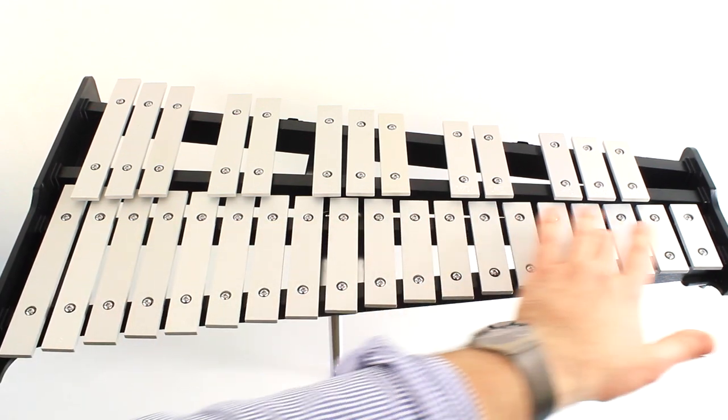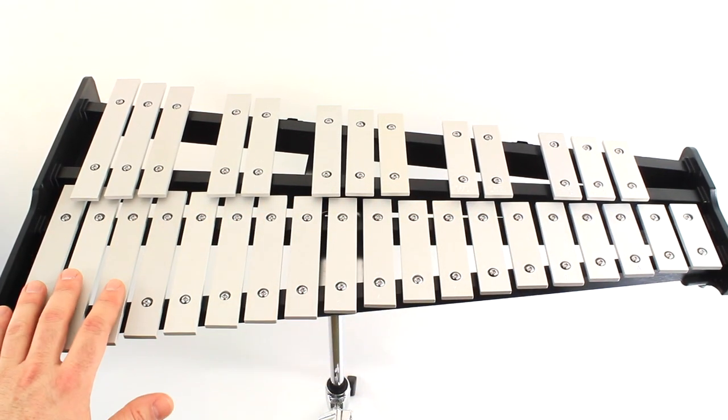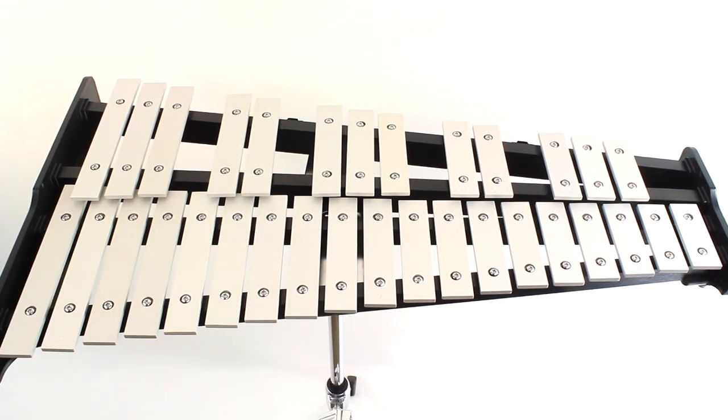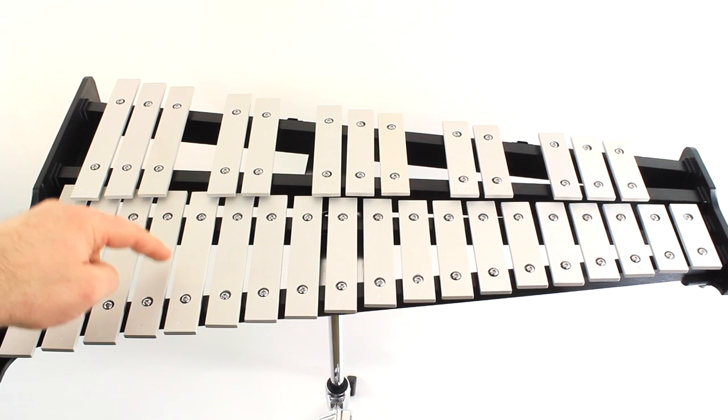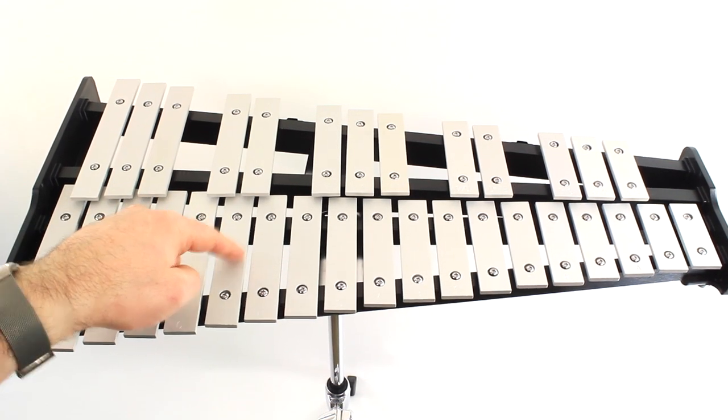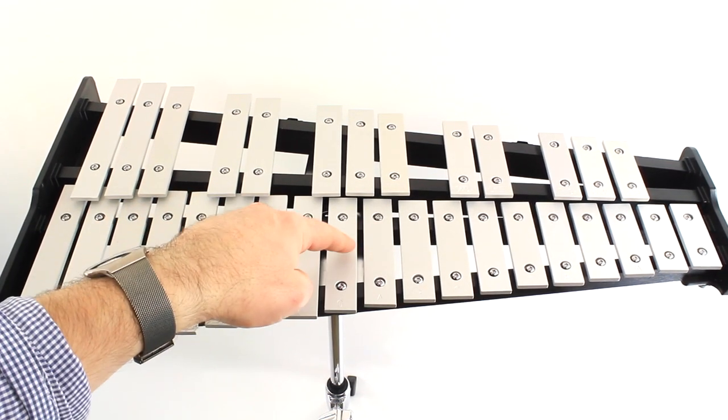This row of bars on our bells are the natural notes, or just the plain musical alphabet. So we have A, B, C, D, E, F, G.